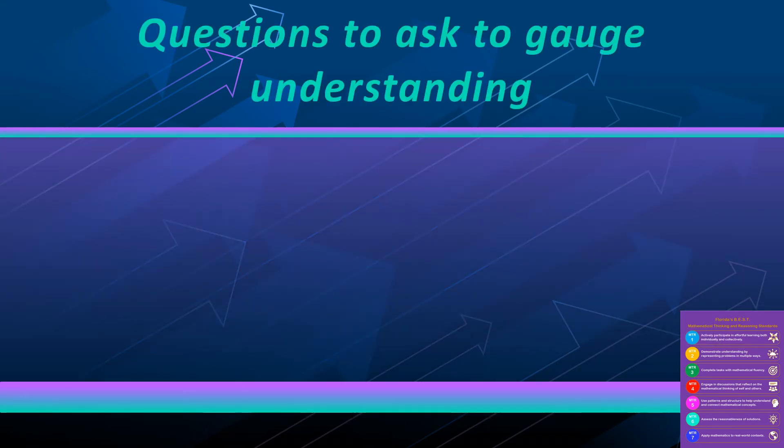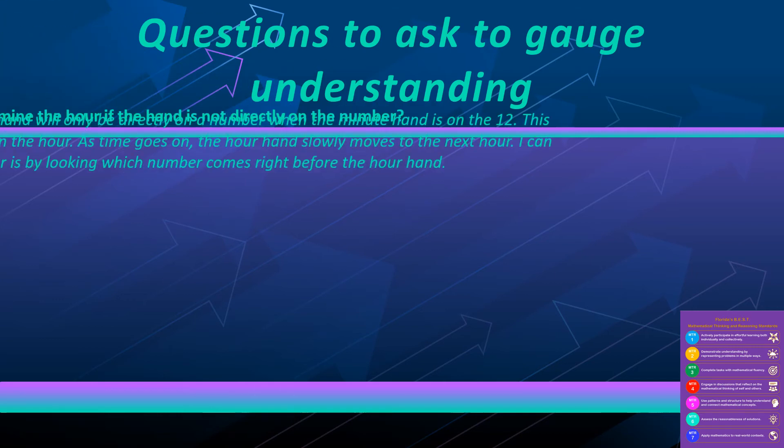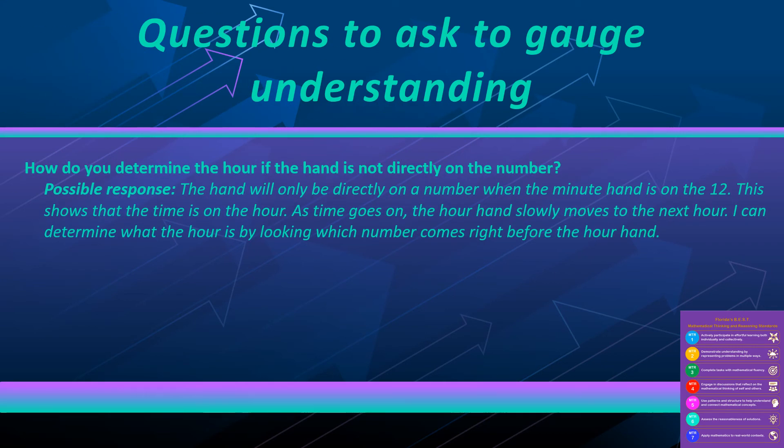Throughout instruction, we can check in with students by asking them questions, or have them ask each other questions to have more rich student-to-student discussion. Our first question, how do you determine the hour if the hand is not directly on the number? A possible response could be, the hand will only be directly on a number when the minute hand is on the 12. This shows that the time is on the hour. As time goes on, the hour hand slowly moves to the next hour. I can determine what the hour is by looking at which number comes right before the hour hand.